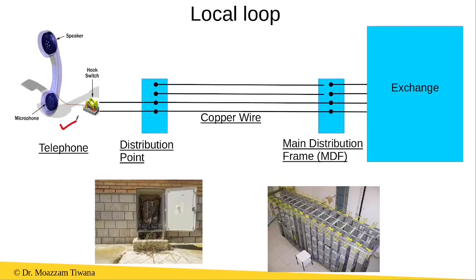The telephone is connected to the exchange through a pair of copper wires. This wired connection between the telephone and the exchange is called the local loop. On the side of the telephone, the telephone is connected to this pair of copper wires using the distribution point.